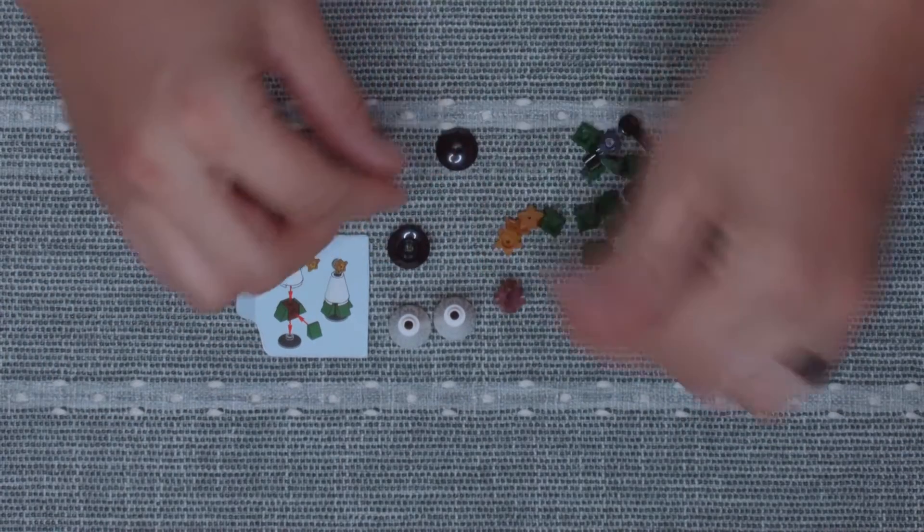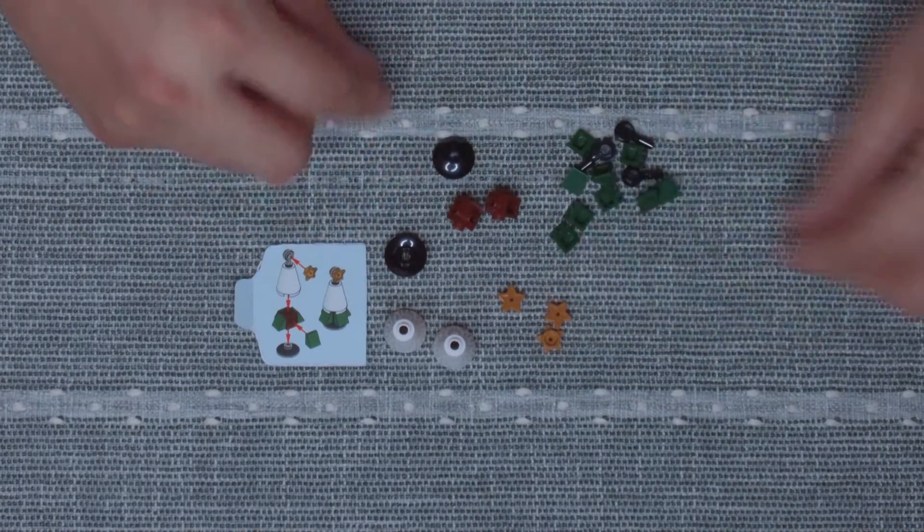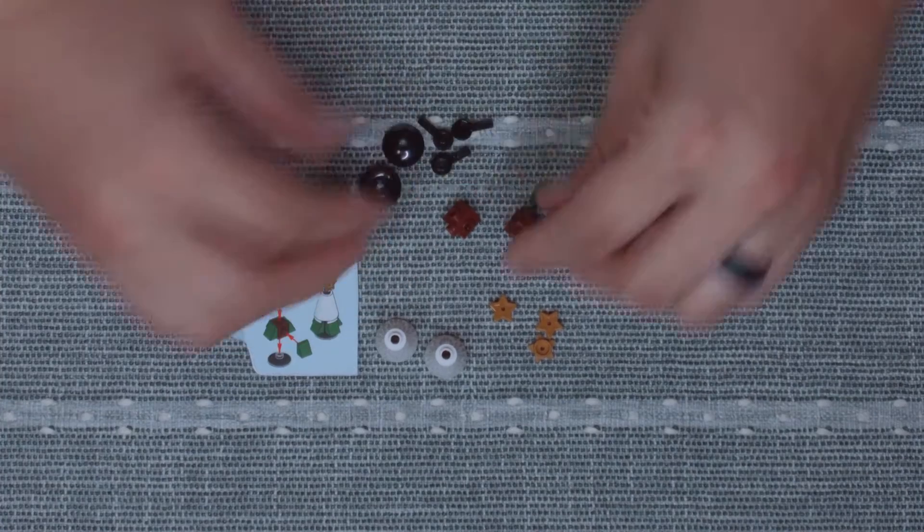Look, we have some star pieces in here. A couple of these big cones. Little green leaves. We're going to separate these into piles.